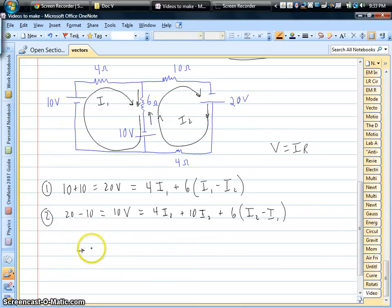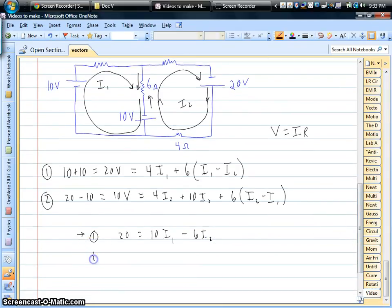So let's see what these give. That first loop equation is 20 equals, let's see, we have a total of 10I1, and then we have minus 6I2. The second loop equation reduces down. Now we've got a 10-volt battery, effectively. We've got, as it looks like, 20I2 and minus 6I1. Okay, so we've got these two equations for the two unknowns, and it's really the most important part. That's the setup. These are our two loop equations, and we could actually go ahead and solve for I1 and I2 from this.